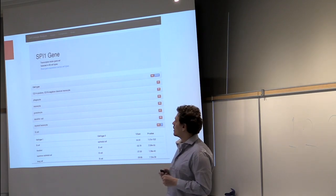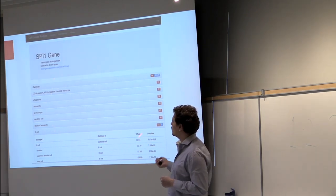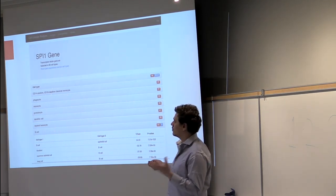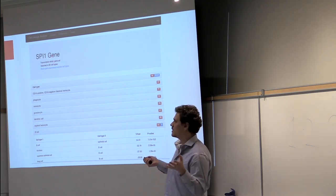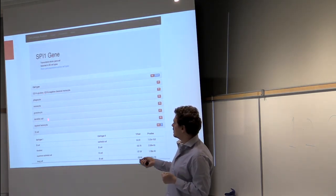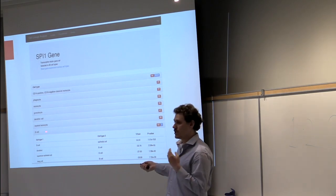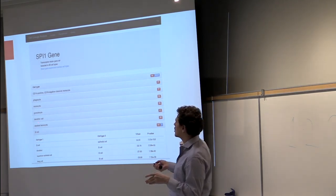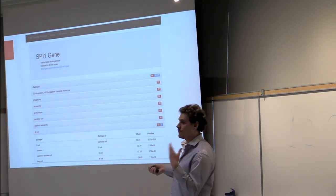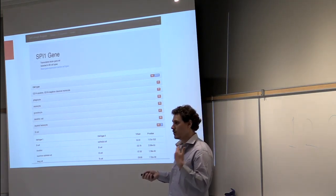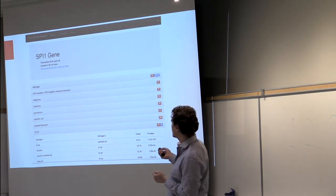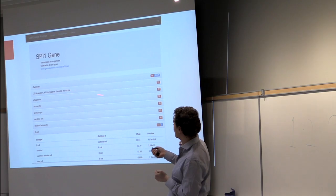So we look at the website that we generated to summarize our results. We look at the gene card for SPI1. What you see here is a list of all the cell ontology terms in which SPI1 was found as important in the random forest.